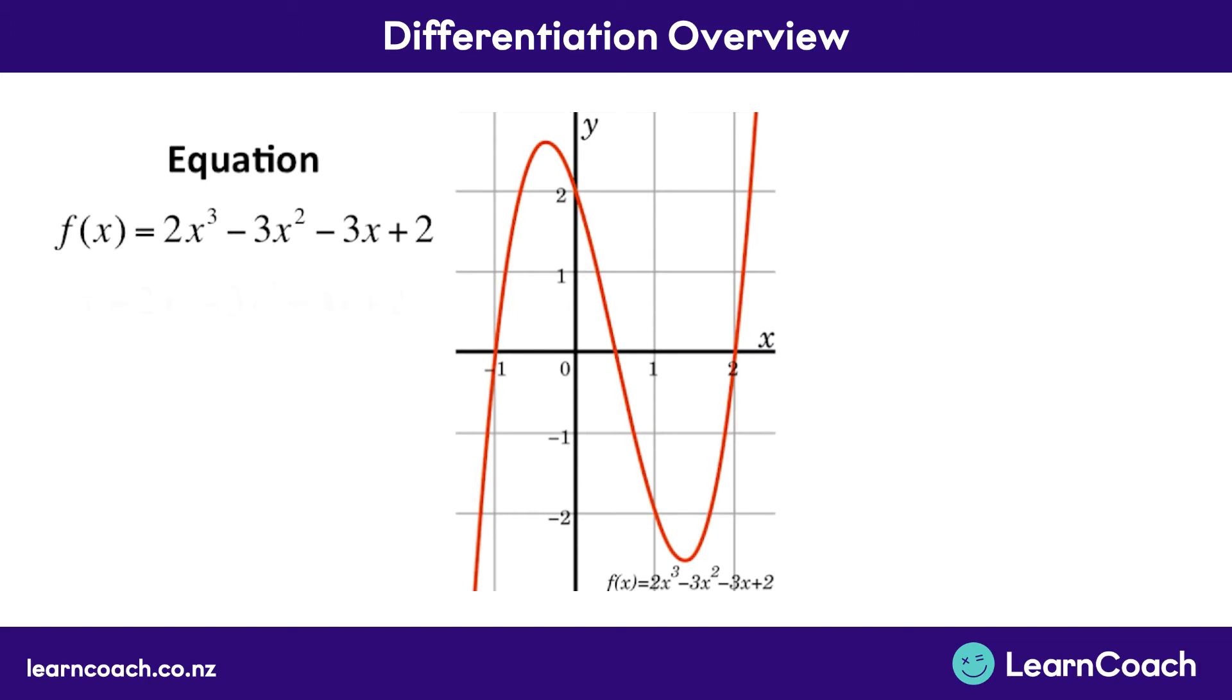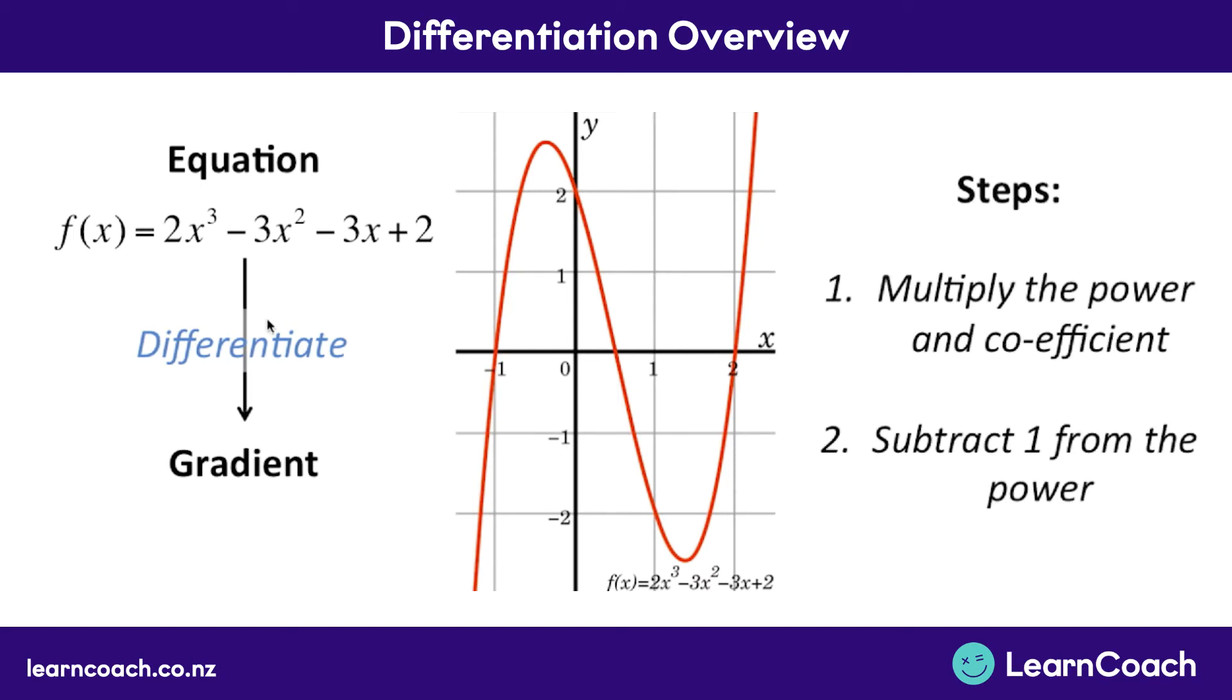So when we differentiate this equation here, we're going to go down and that will give us a function or an equation for our gradient. Now if you remember how to differentiate, you need to multiply the power of x by the coefficient of x. The coefficient just means the number in front of the x. And the second step is we subtract one from the power, so that would give us x squared. So that's how you differentiate. Once you've got it, this f dash x, which shows how you've differentiated it, will give you your gradient function, the equation that allows you to work out your gradient.